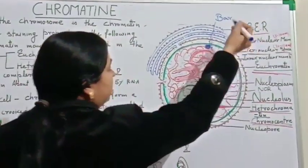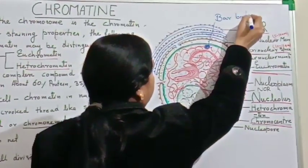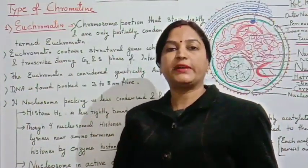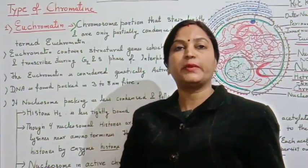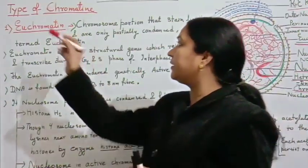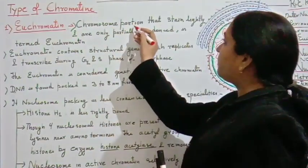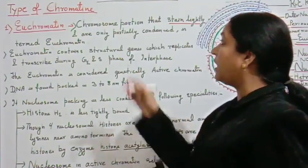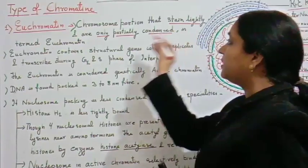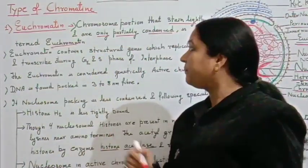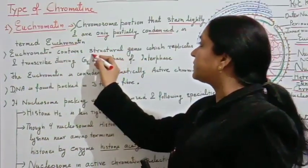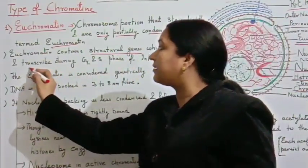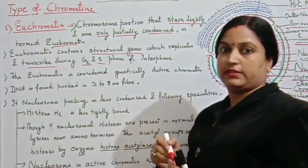In the female mammalian cell, we also study Barr bodies. There are two types of chromatin: euchromatin and heterochromatin. Euchromatin is a portion of the chromosome that stains lightly, is only partially condensed, and contains structural genes.